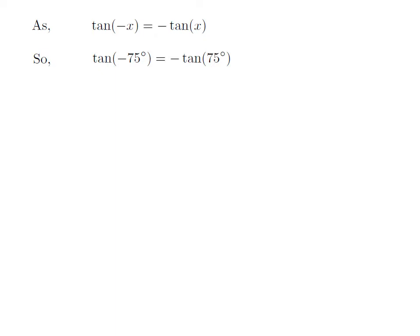Let us apply the above identity for tan(-75°). Here x is 75°. So tan(-75°) = -tan(75°).